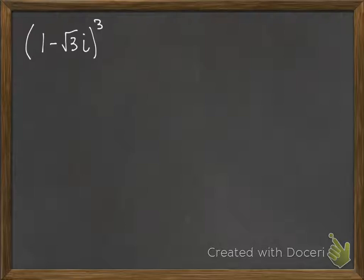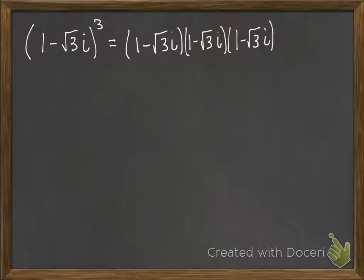So as we cube something, remember that means multiply times itself three times. Now, when we take something and multiply something three times, we have to first multiply two things. So let's take the first two.